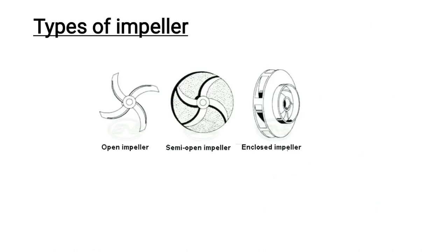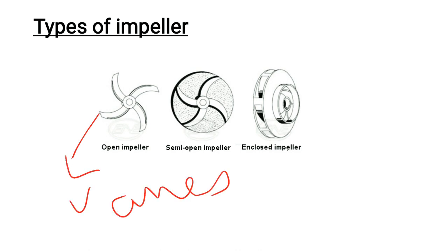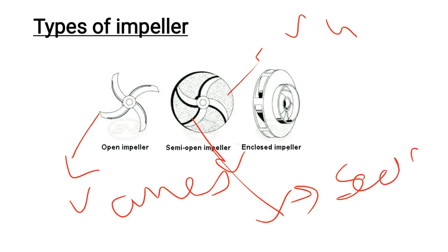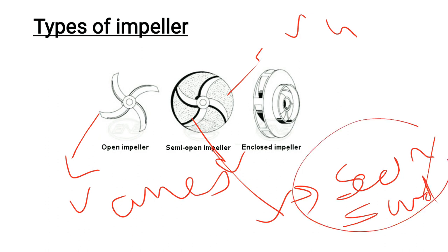There are three types of impellers: open type, semi-enclosed type, and enclosed type. In the open type, the vanes are attached only on one side with no shroud. In the semi-enclosed type, there is one shroud plate on one side. The open type impeller is used where there are sediments or sand, as it can pump such water without clogging.